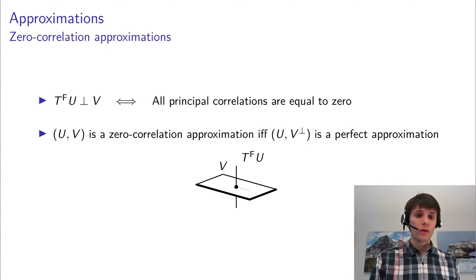For such a pair we defined an approximation map which had properties such as its singular values behaving like a generalization of ordinary correlations. There were several different types of approximations such as zero-correlation and perfect approximations. But in the general case it's necessary to compute that approximation map or at least estimate it, and for that we need trails and the piling up principle. As I discussed, this piling up principle in the general setting takes the form of a geometrically intuitive process of successive orthogonal projections.